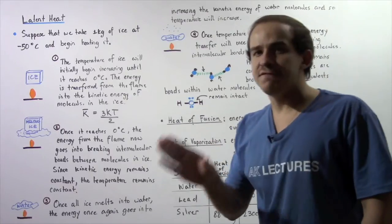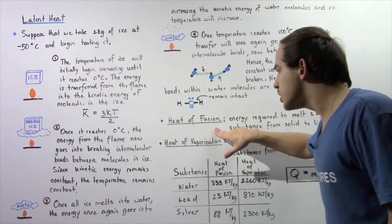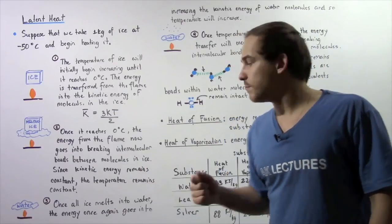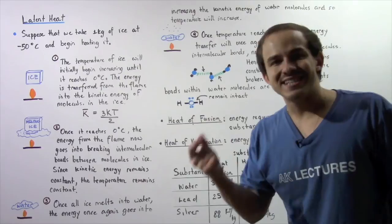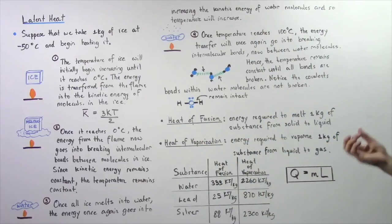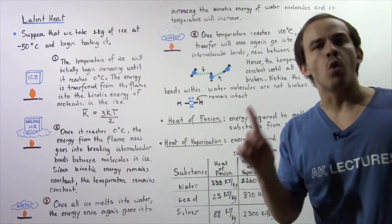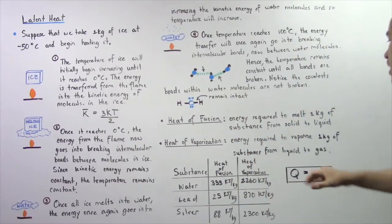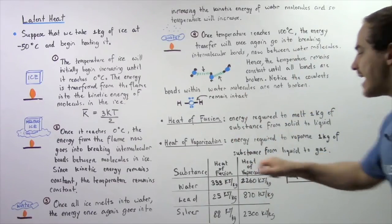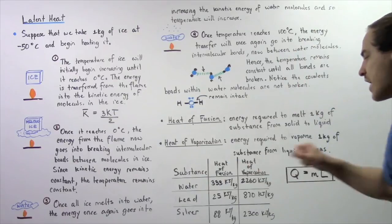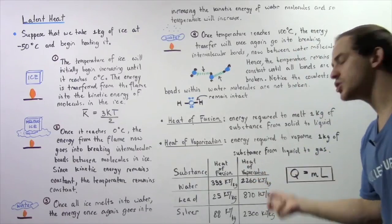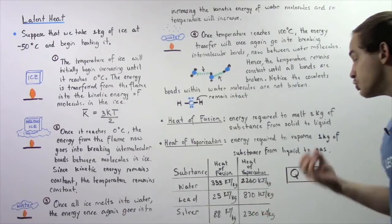In the same way that we define the heat of fusion as the energy required to melt something, the heat of vaporization is the quantity of energy required to vaporize one kilogram of a substance from the liquid state to the gas state. For water, it's 2,260 kilojoules per kilogram.